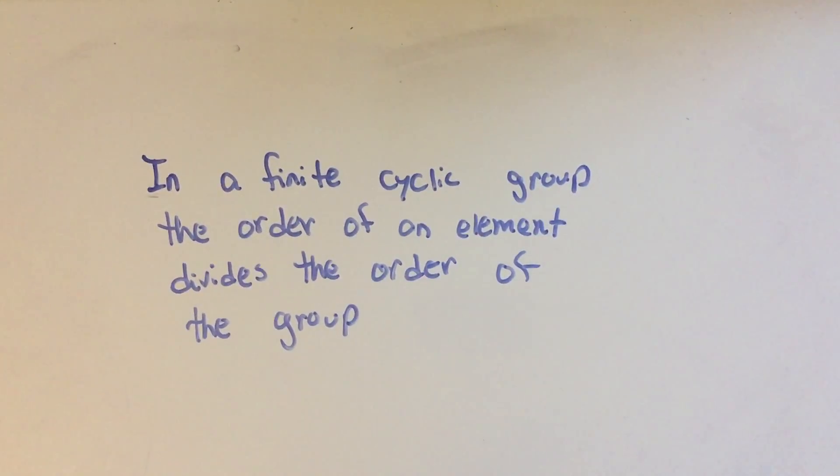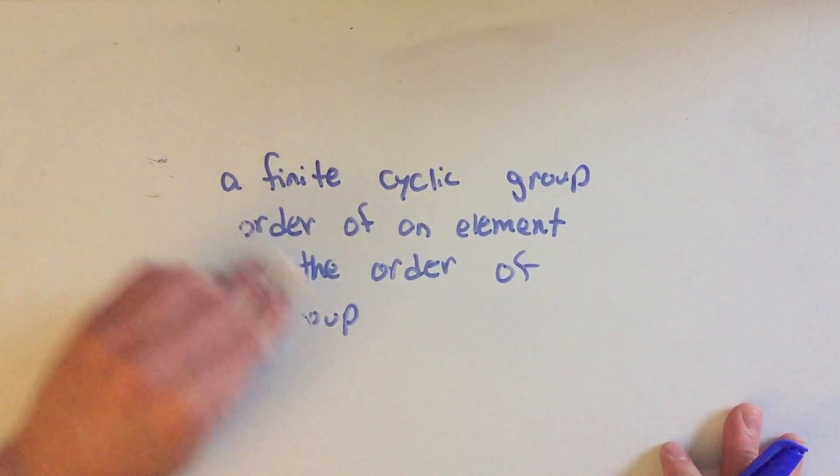Hi everyone, I have another theorem in abstract algebra to prove for you. This one says that in a finite cyclic group, the order of an element divides the order of the group. There's actually a more general theorem to this that maybe I'll prove later, but right now I'm just going to prove the finite cyclic group case.